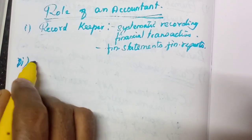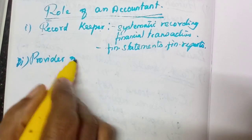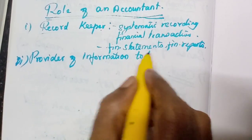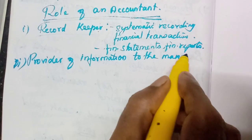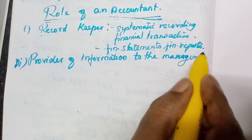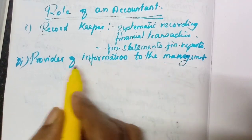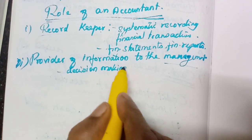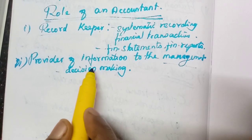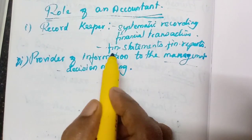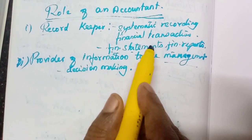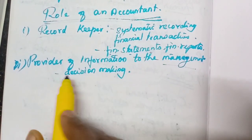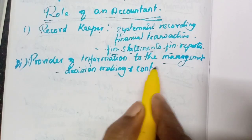The second role is provider of information to the management. He assists the management for decision-making purposes by providing financial statements and financial reports, so that management can take decisions and control business operations.